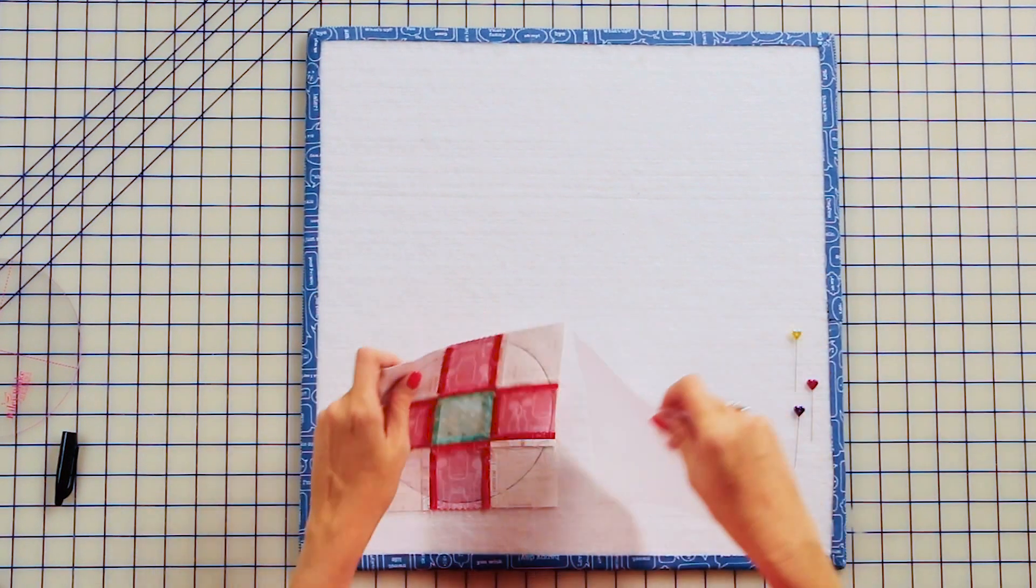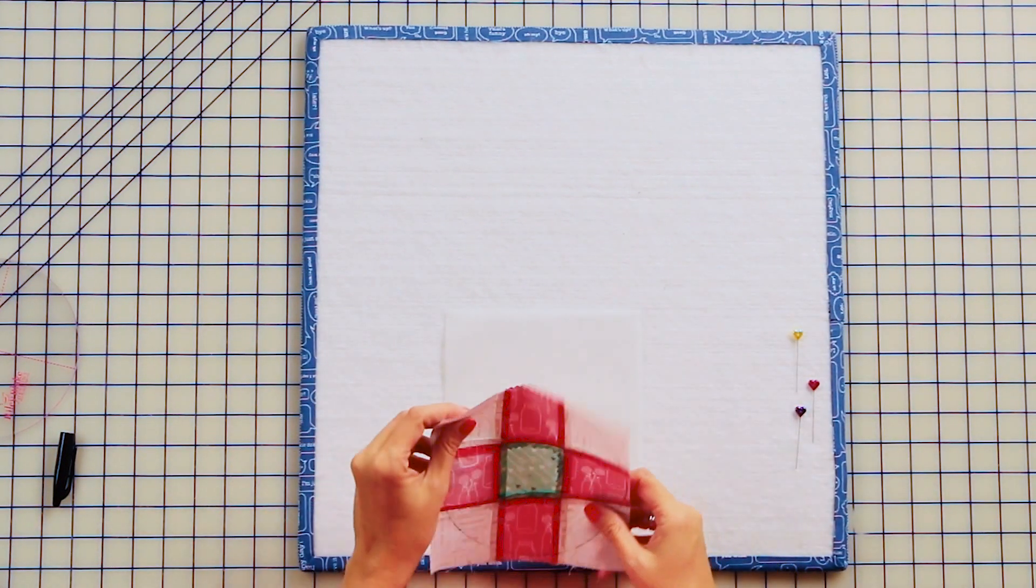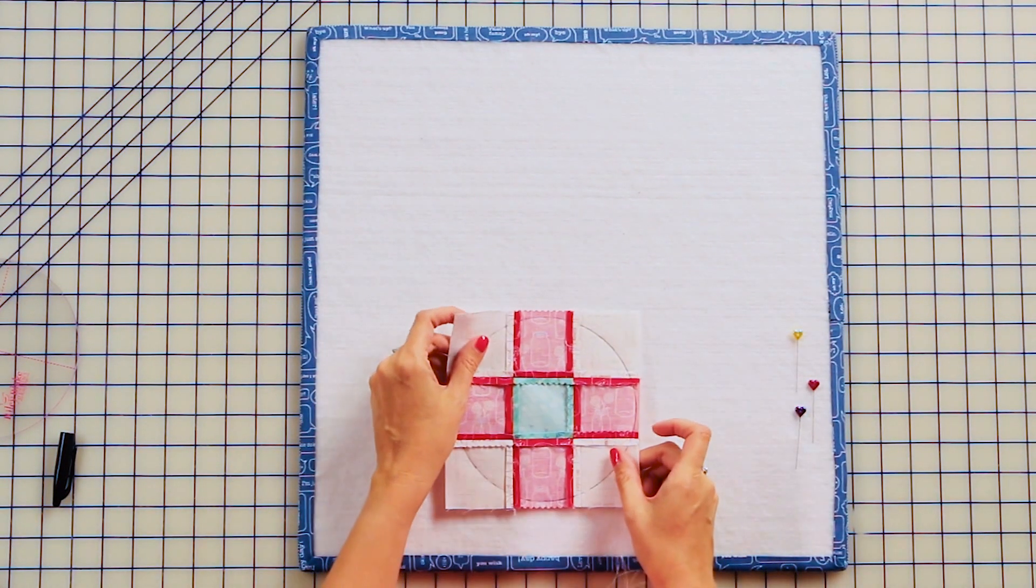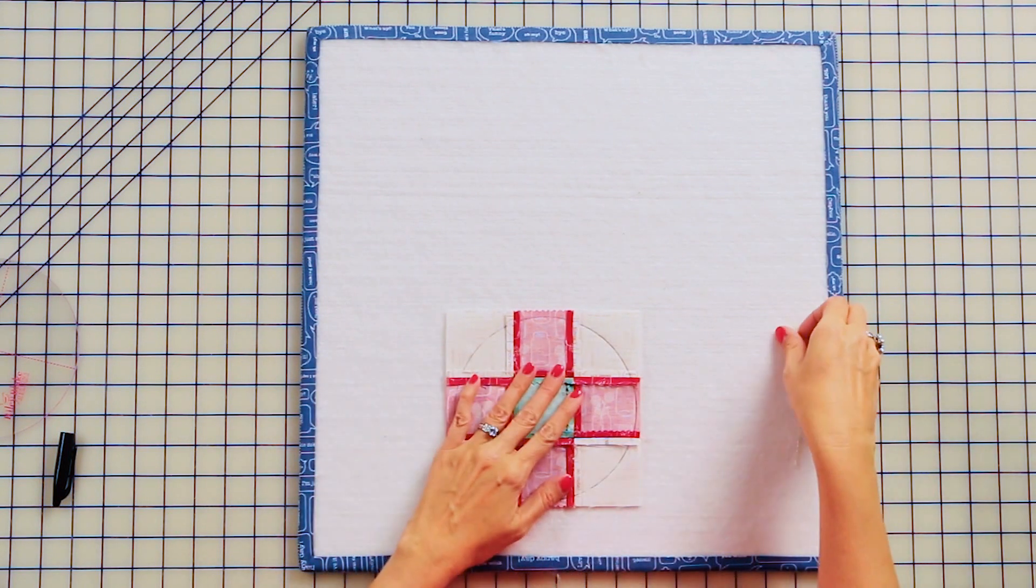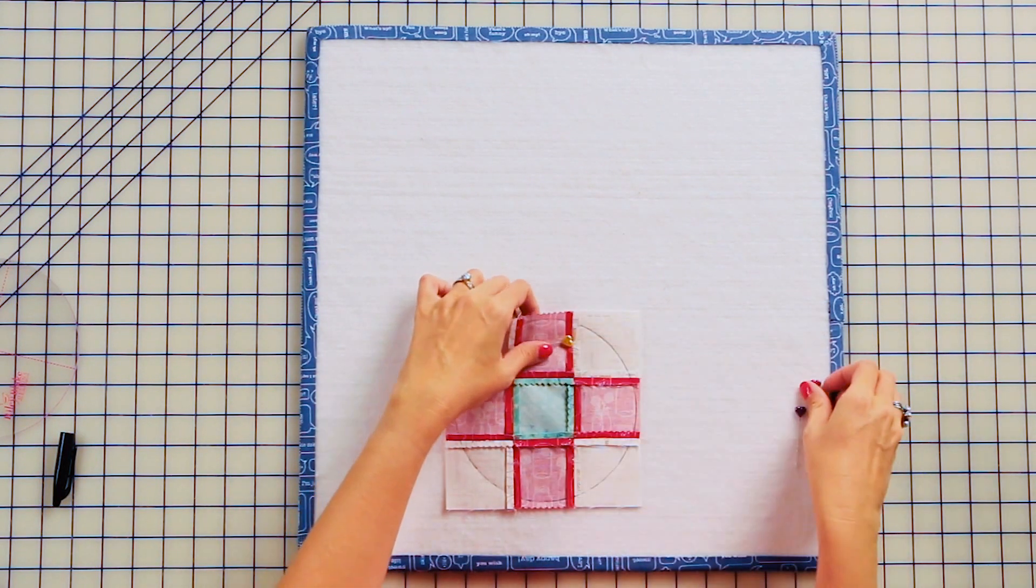Place your block right sides together with a Pelon square, pin in place, and we're going to sew these together.